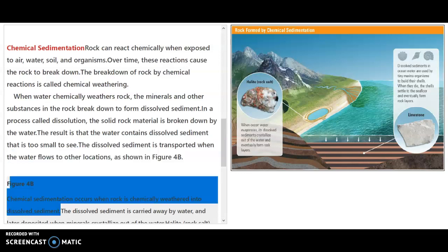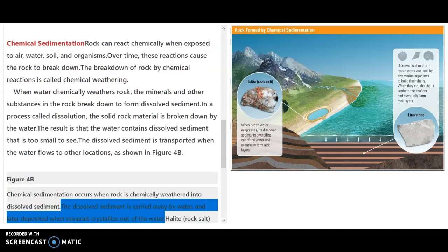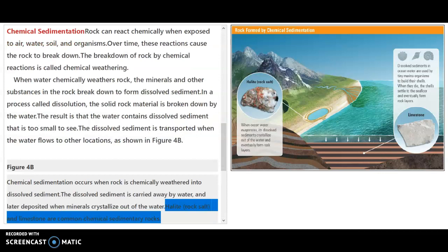So 4b has different types of chemical sedimentation. Chemical sedimentation is formed when it's weathered into dissolved sediment. This dissolved sediment is carried away by the water and then later deposited when minerals crystallize out of the water. Halite or rock salt and limestone are common chemical sedimentary rocks.